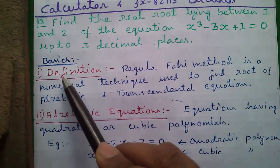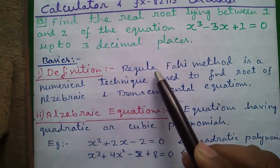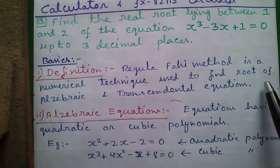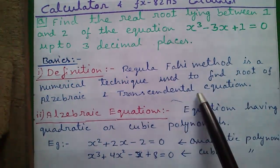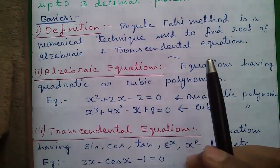First some basics, the definition of Regula Falsi method. Regula Falsi method is a numerical technique used to find roots of algebraic and transcendental equations.